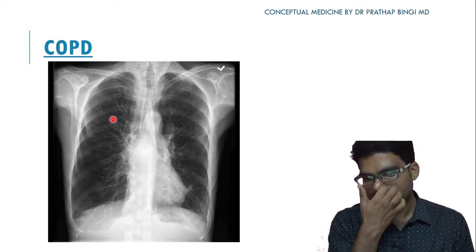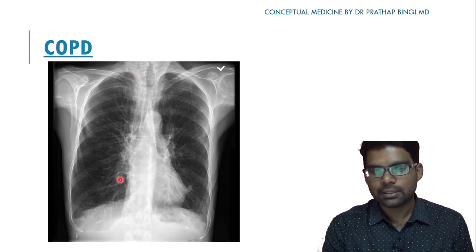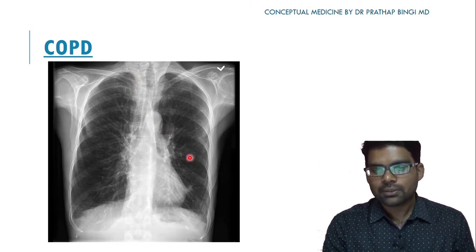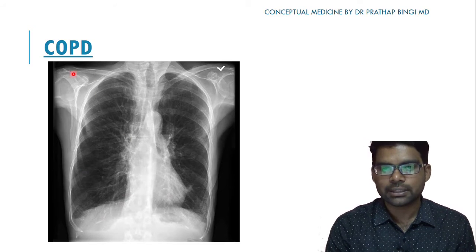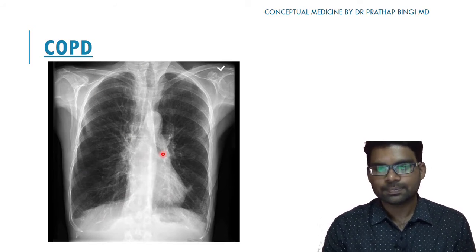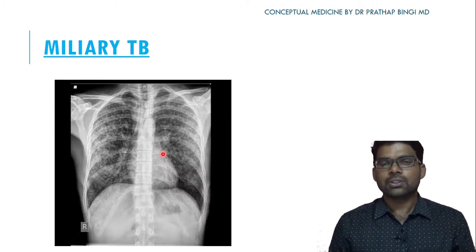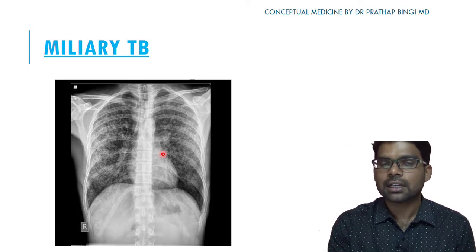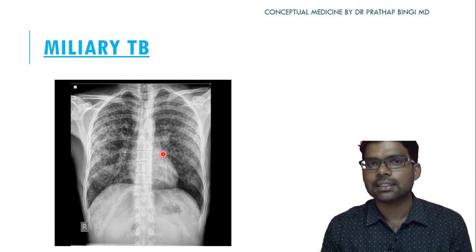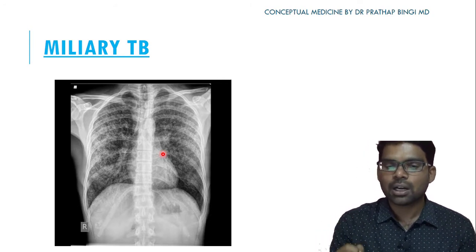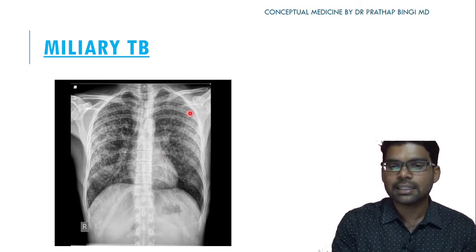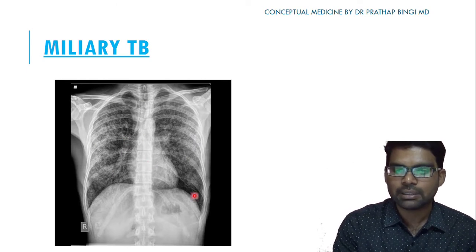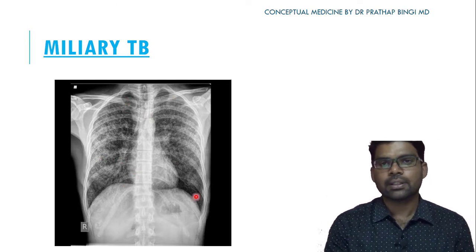Returning to COPD — the four hallmarks are hyperinflated lung fields, diminished bronchovascular markings, flattening of diaphragms, and tubular small heart. Miliary TB presents as small nodular opacities less than 2 mm distributed throughout both lung fields in all zones, called a miliary or panoptic distribution, as shown in this classical X-ray of miliary pulmonary tuberculosis.